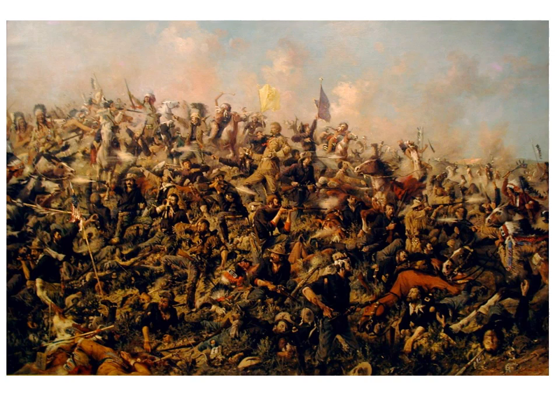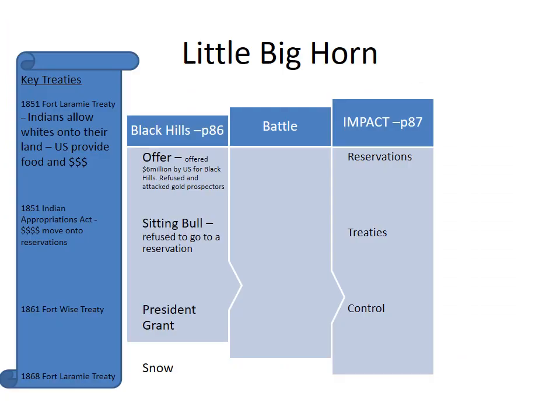So this is 'Where's Custer?' — I'll leave that one with you to spot him in the picture. I'll put this slide on so you can print it out or write it in your book. Just remind yourself using the first page of the textbook, page 86, that I scanned for you. The 1851 Fort Laramie Treaty, in simple terms, for the first time allowed whites onto Indian land, and in exchange the U.S. government provided food and money.